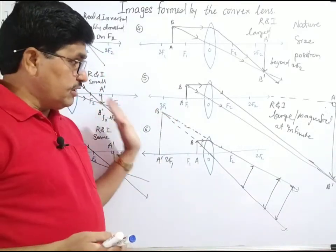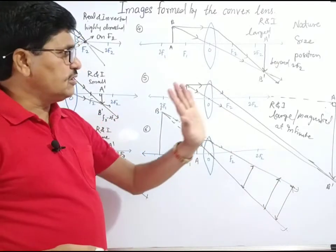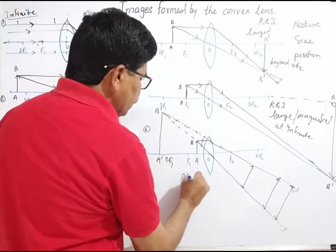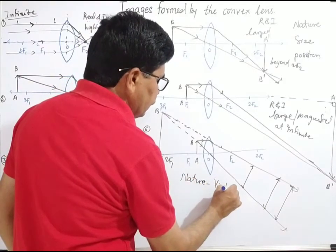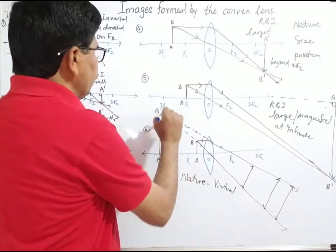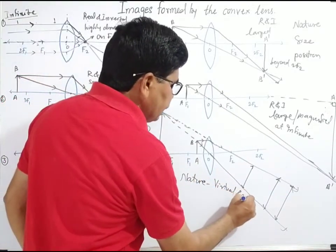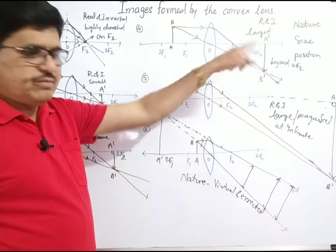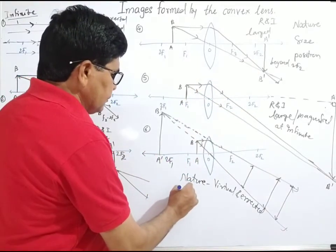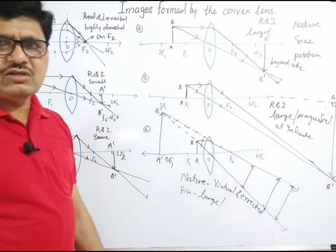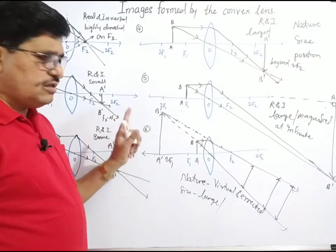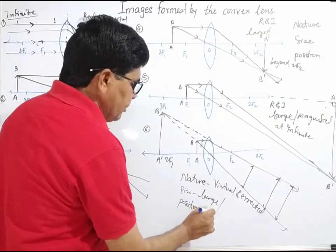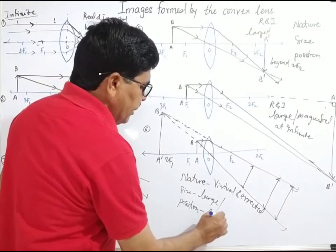The refracted rays appear to meet together after refraction — not actually meet. When refracted rays appear to meet together, the nature of the image is virtual and erected. The size of the image is magnified or large as compared to the size of the object. The position of the image is behind the object.